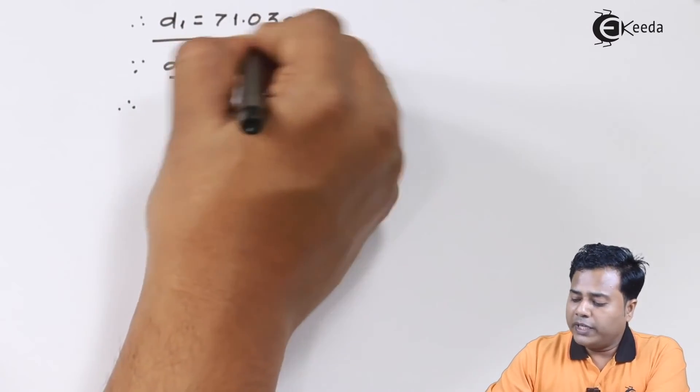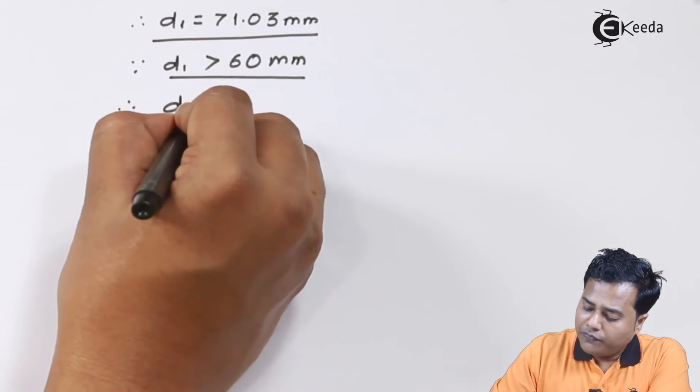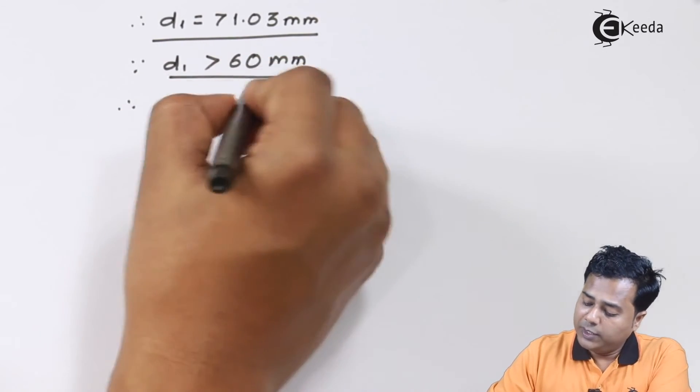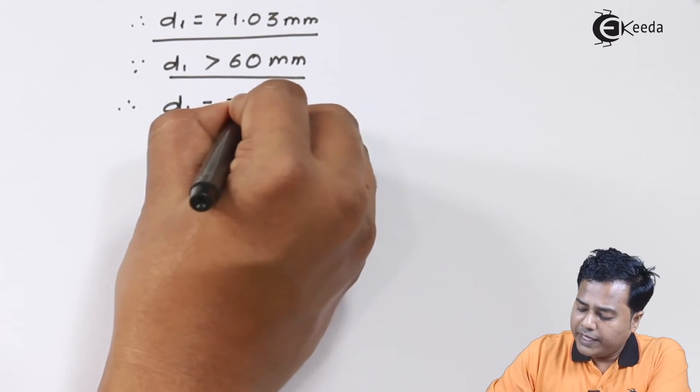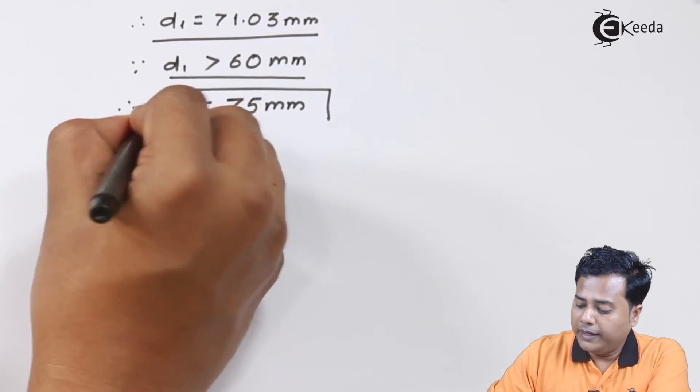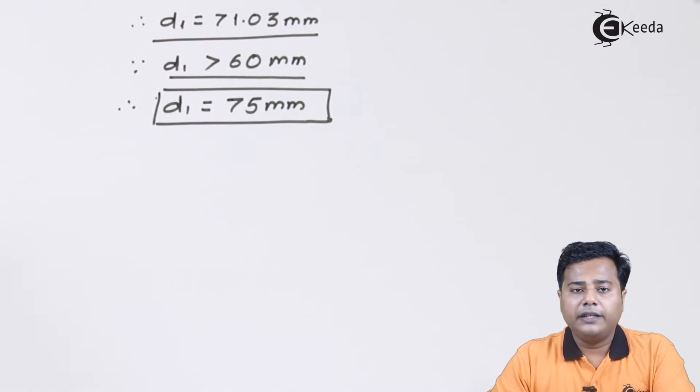Since d₁ is greater than 60 mm which we had estimated through the standard relation, we will go for a preferred series value. The diameter d₁ of eye end becomes 75 millimeter. Hence this is our first design parameter as far as eye end is concerned.